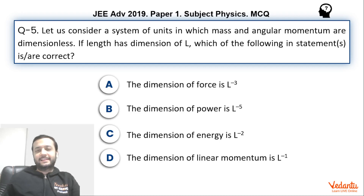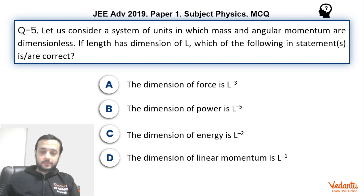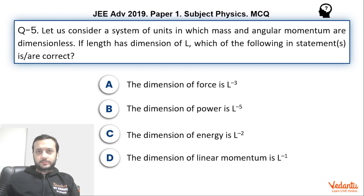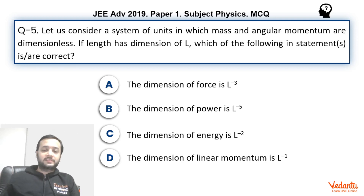Hi dear students, let's see this question that came in JEE Advanced paper 1 physics in the year 2019. This question was from the topic of dimensions and it was a multiple choice correct question. The question was simple but in my opinion this type of question came for the first time on the topic of dimensions. So students who had not seen these type of questions might have felt slightly panicked, but overall the question was simple.